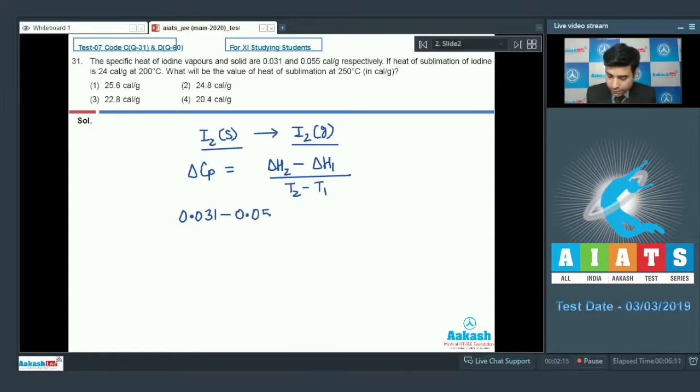It is 0.055. This is equal to delta H2, it is not known, minus delta H1 which is 24, divided by 250 minus 200. Because it is difference, we can use in degree Celsius also.